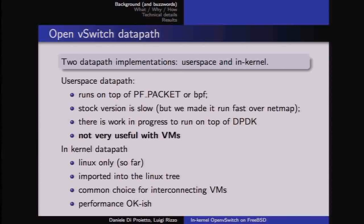However, the user space version is not very useful with virtual machines. With VMs attached to tap interfaces, packets must travel from the first VM to the kernel, then back to user space for the data path, then back to the kernel, and back again to user space. The latency and overhead in this case is huge.